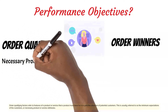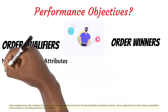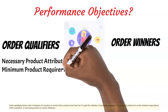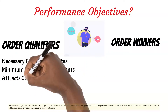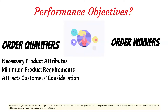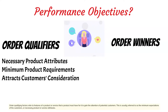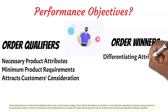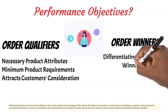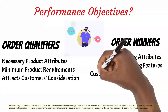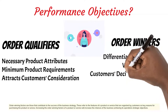Order qualifying factors refer to features of a product or service that it must have to gain the attention of potential customers. This is usually referred to as the minimum expectations of the customers, or necessary product or service attributes. Order winning factors are those that contribute to the success of the business strategy — the features regarded by customers as key reasons for purchasing the product or service.